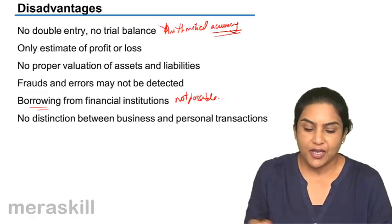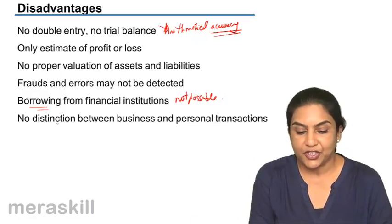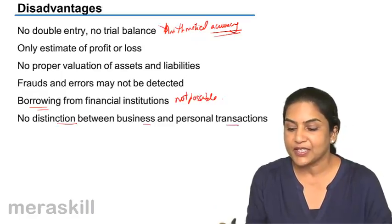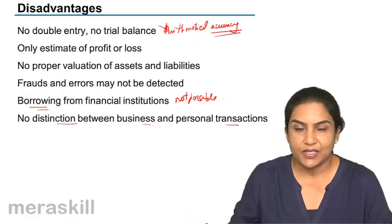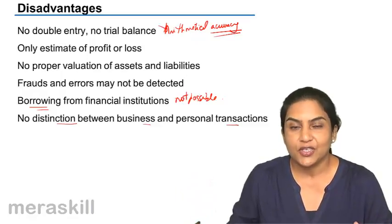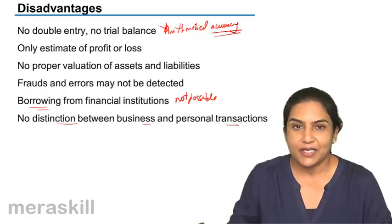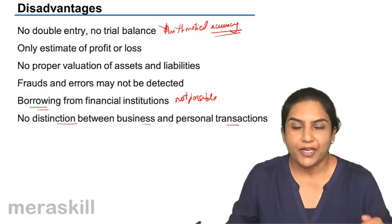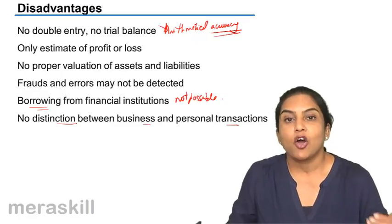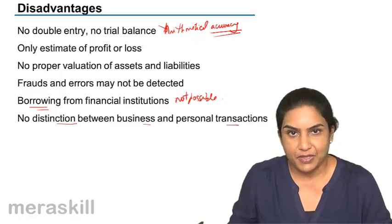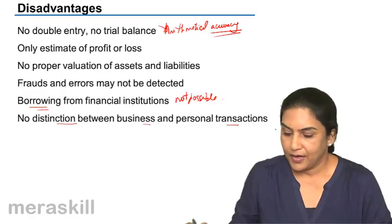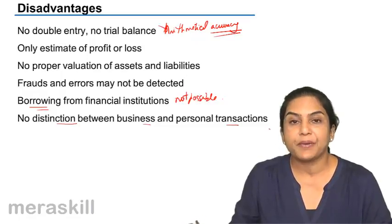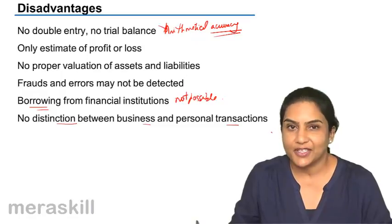There is no distinction between business and personal transactions — the owner's transactions and the business expenses may get mixed up, since proper distinction is not made. The proprietor uses cash for his own expenses as well as for the expenses of the business. These, in brief, are the disadvantages of a single entry system.